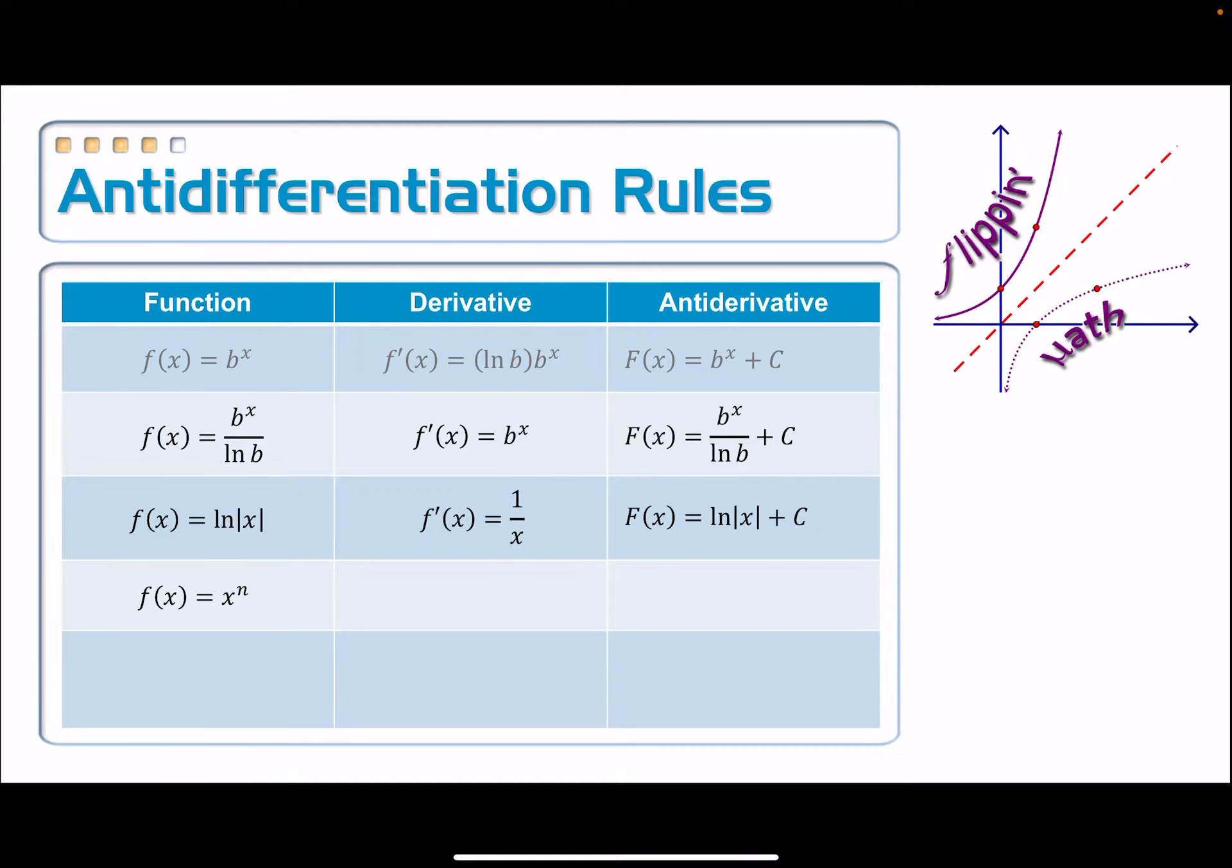All right, and then next up we have the power rule. When I take the derivative of f of x is equal to x to the n, it's the leapfrog thing. I leapfrog that power down and then subtract 1 from it. So it should be n times x to the n minus 1.